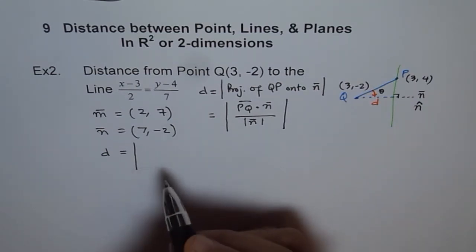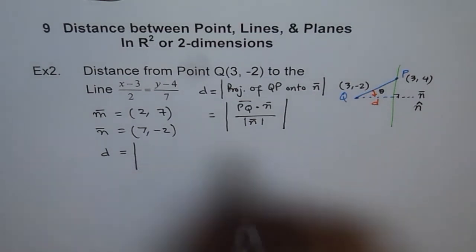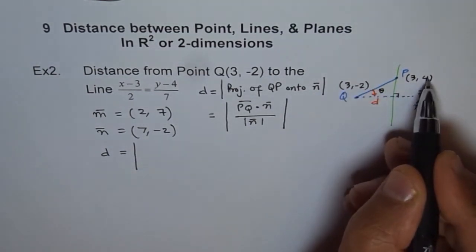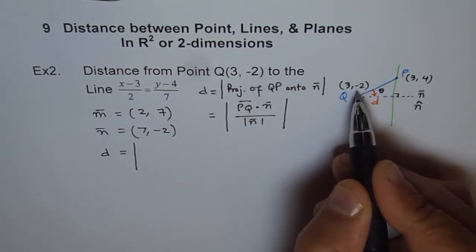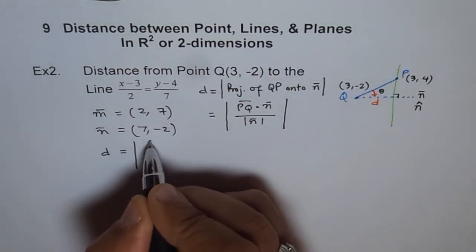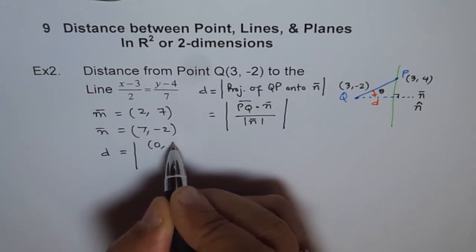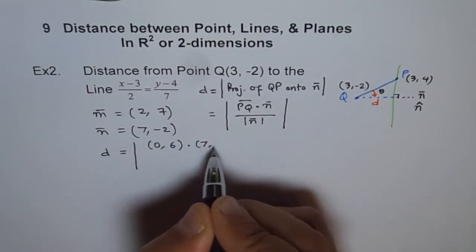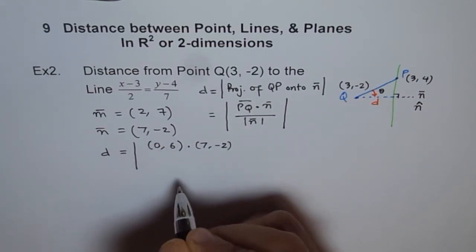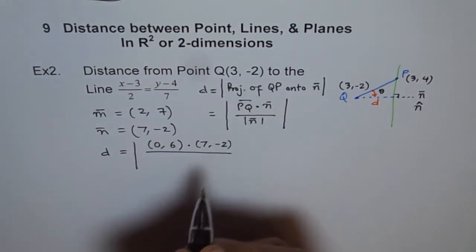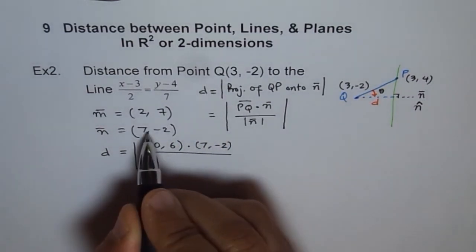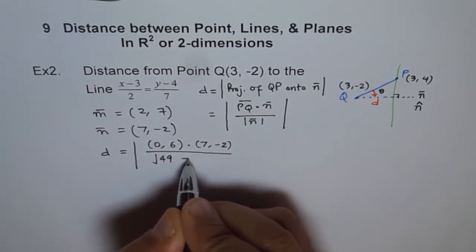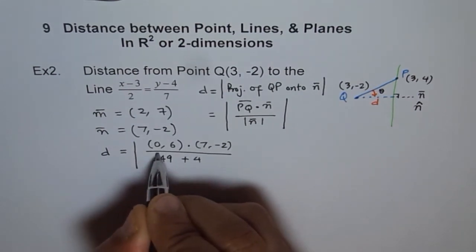So here it is, D equals what? This 3 minus 3 which is 0 and 4 minus minus 2 which is 6. So I am writing here as (0, 6) dot product of (7, -2). That's my normal. Divided by the magnitude of this which is 7² which is 49 plus (-2)² which is 4.